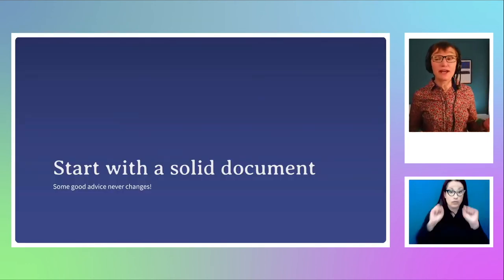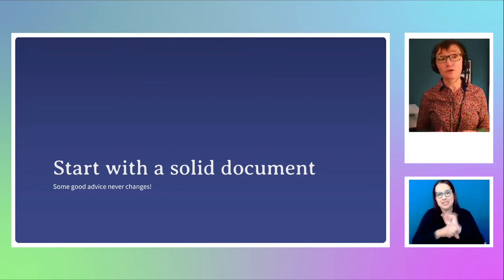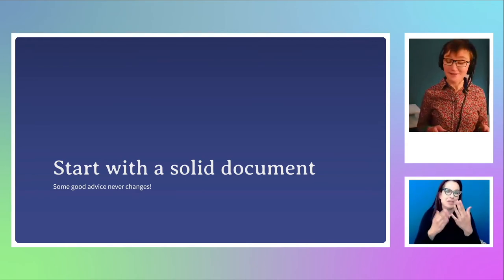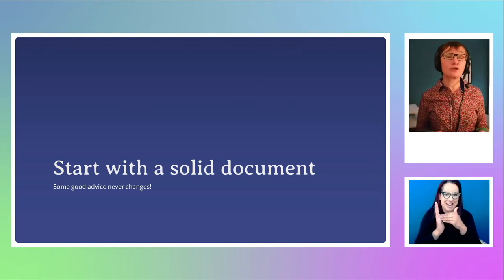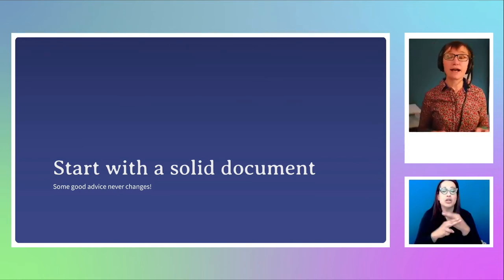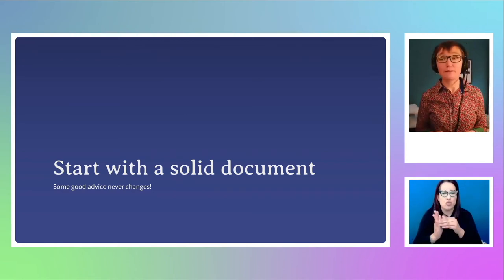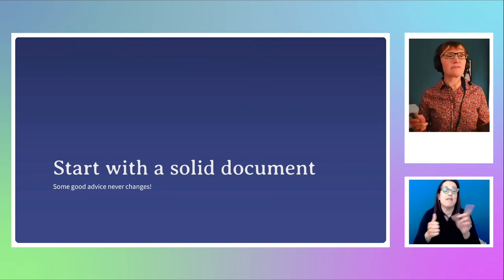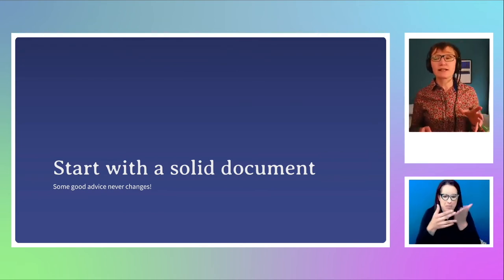So we're back to age-old advice: start with a document which has a solid semantic document order. I was saying this nearly 20 years ago. This is what you start with — a good document. And then if you do use any of these techniques that can cause content reordering, make sure you test it and make sure you haven't made a mess. Test it at different breakpoints, because it might be fine at desktop and fine at mobile, but there might be some bit in between where it all goes a bit weird.